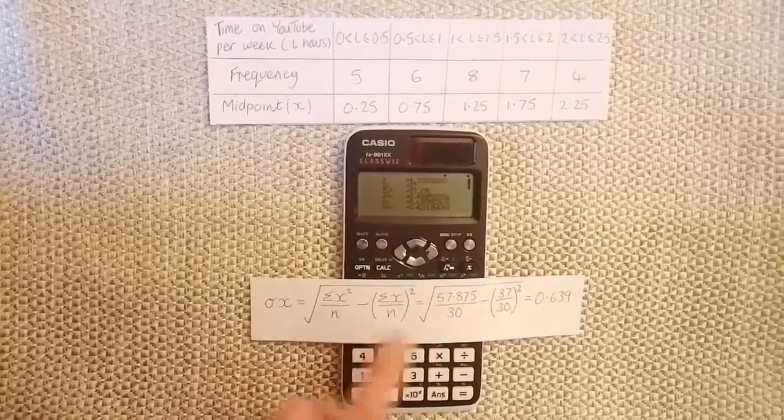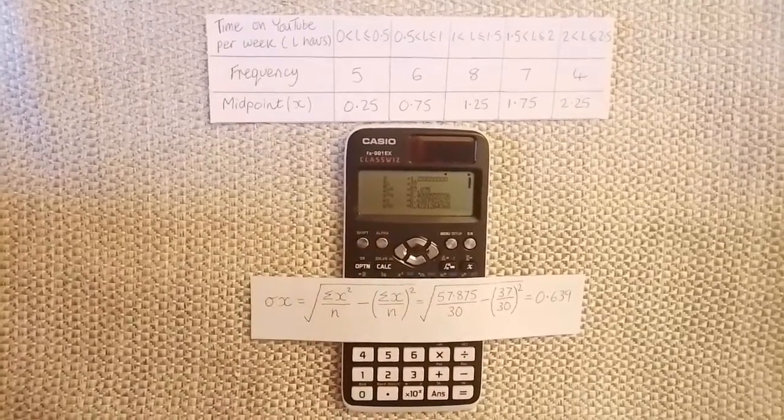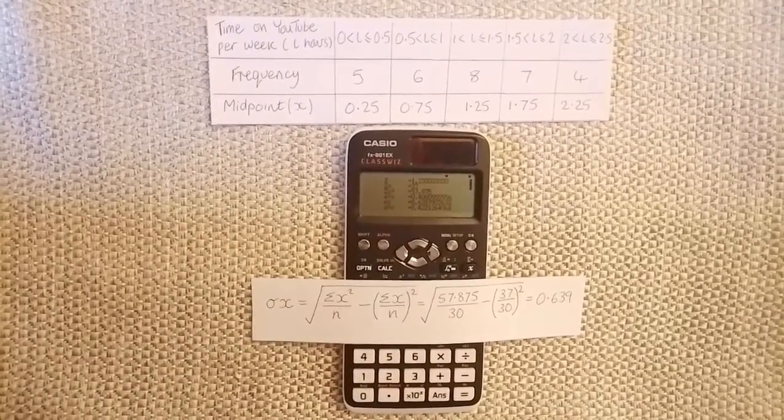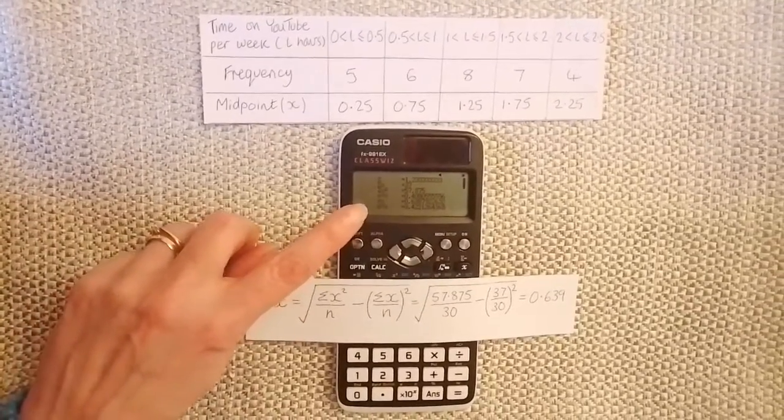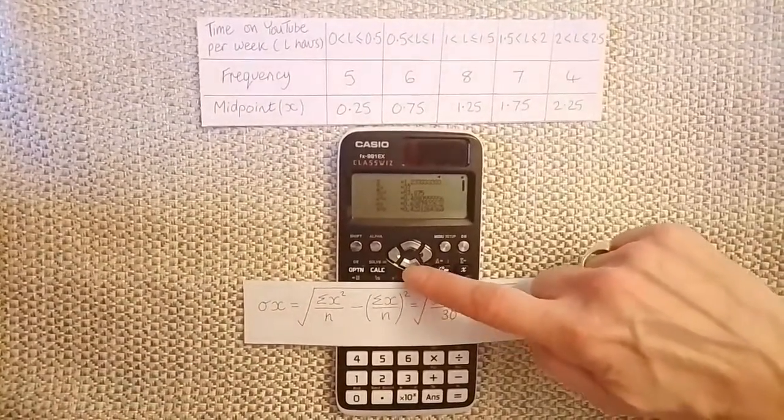We can get all of these values from the summary statistics and substitute them in the equation to get sigma x. Again, you will find n on the second page.